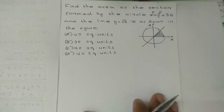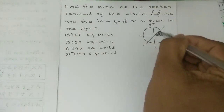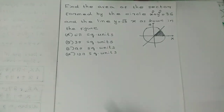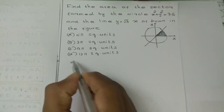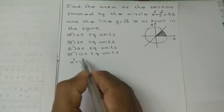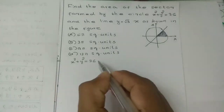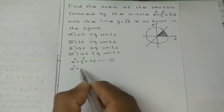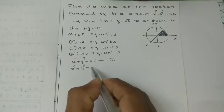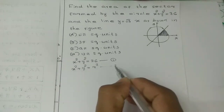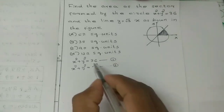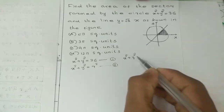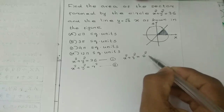We will find the area of the sector. From the circle equation x² plus y² equals 36, we compare with the standard form x² plus y² equals r², giving us r² equals 36.